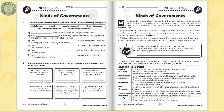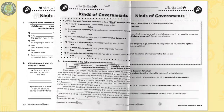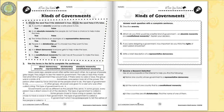Begin with the first section of this bundle, American Government. Every chapter has a Before You Read section to see what learners already know about the topic, ideal for differentiated learning. Recognize that there are several different kinds of government, like constitutional monarchy, dictatorship, and representative democracy.